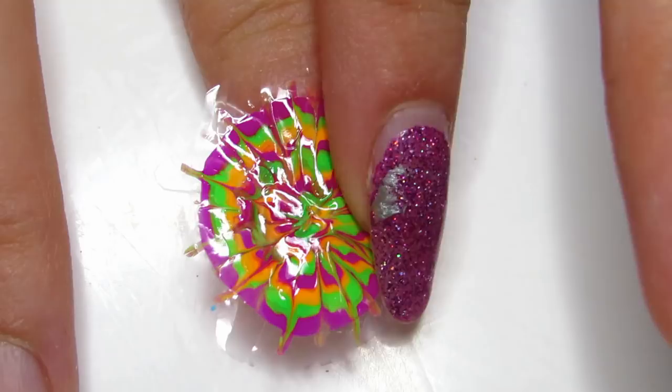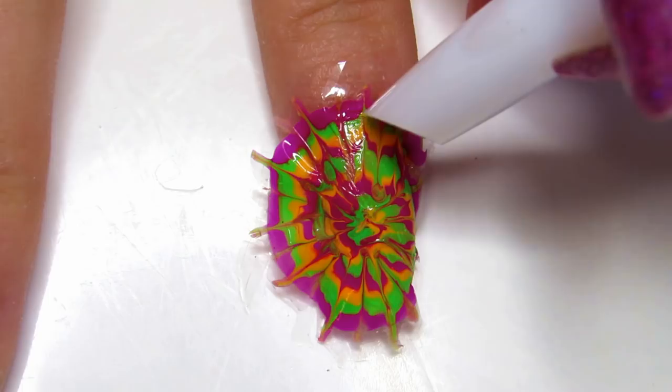Pat it down until it's smooth, and then taking a cuticle pusher, I push in the indents around my nail plate. This will loosen up the sticker, and then you can easily peel away the excess.